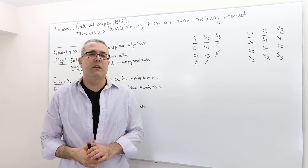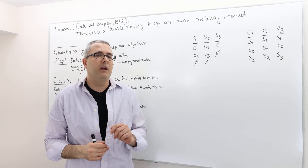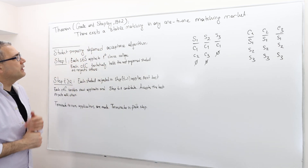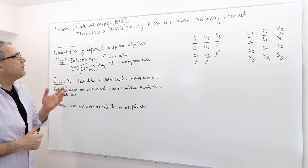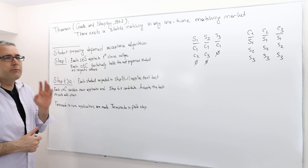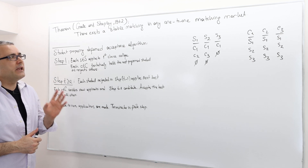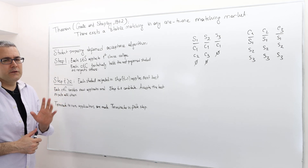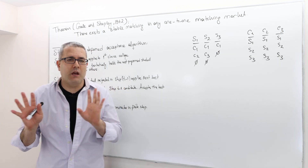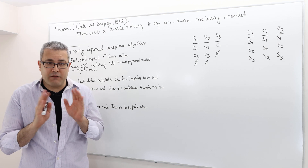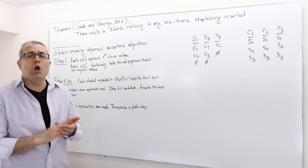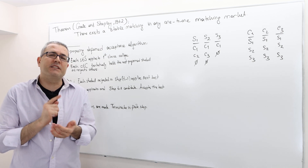In this episode I'm going to talk about a very powerful theorem, first proposed by Gale-Shapley in 1962. The theorem is the following: there always exists a stable matching in any one-on-one matching market. So for any preference relation you give me, if it is a finite, one-to-one matching market, I will always get you a stable matching.